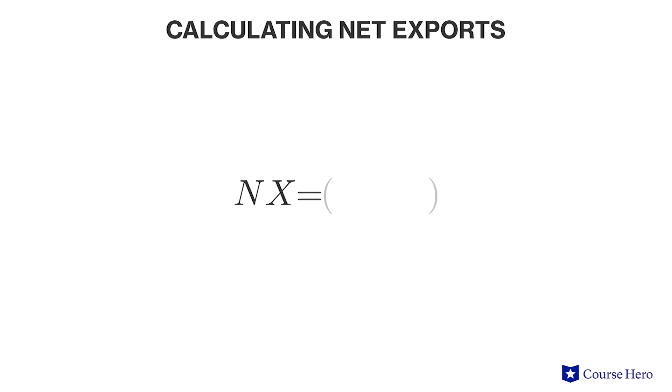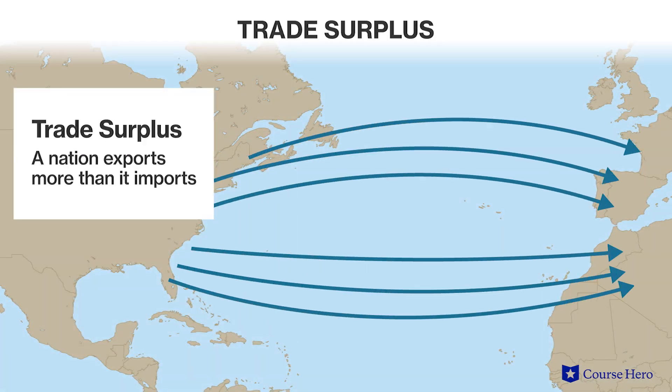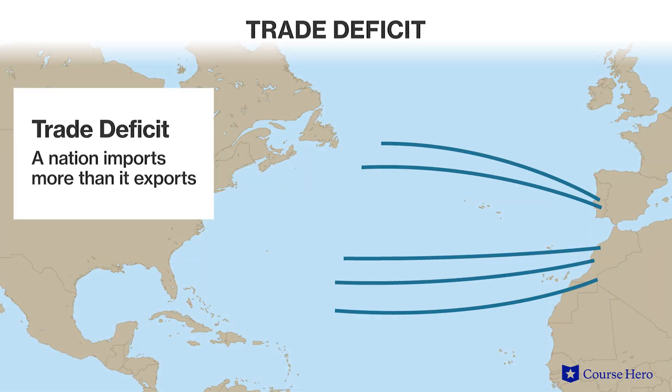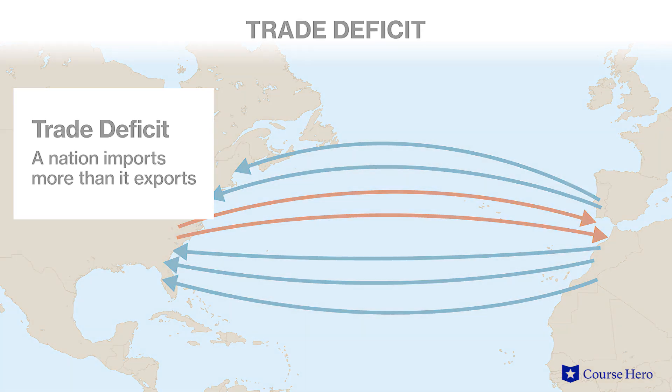In the expenditure approach, imports and exports are also taken into account under the net exports category. Imports must be subtracted from GDP. The equation for net exports is exports minus imports. A situation in which a nation exports more than it imports is a trade surplus. A situation in which a nation imports more than it exports is a trade deficit. The United States typically had a trade surplus in the decades following World War II, but more recently has had a trade deficit.